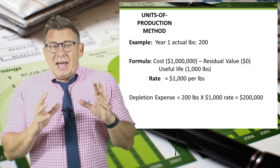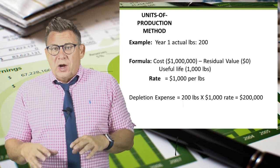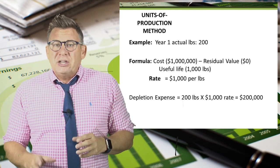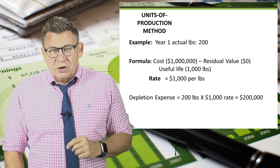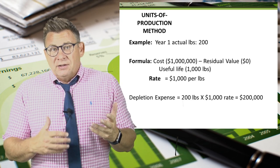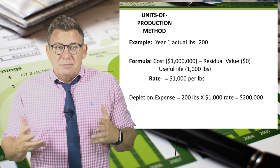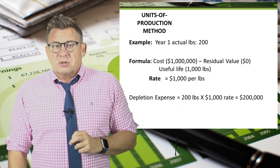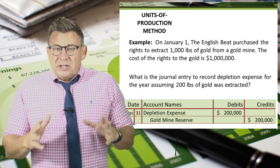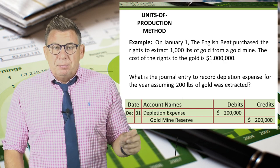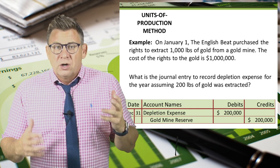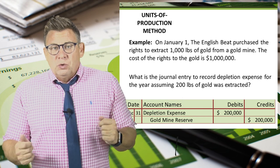If the actual gold extraction in year 1 was 200 pounds, then the amount of depletion expense is $200,000. We get this by multiplying the 200 actual pounds times the depletion rate of $1,000 per pound. We record the adjusting journal entry by debiting depletion expense and crediting gold mine reserve for $200,000.